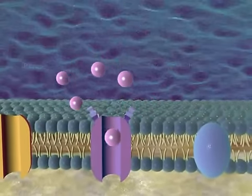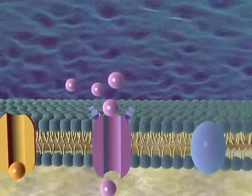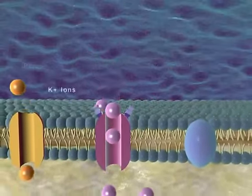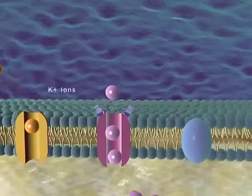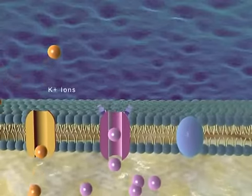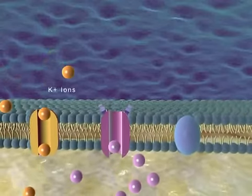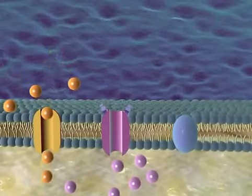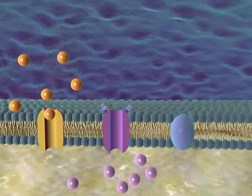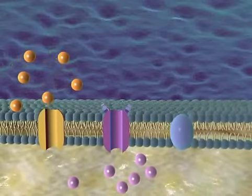In nerve cells, for example, movement of sodium ions into the cell usually excites the cell. Movement of potassium ions out of the nerve cell inhibits nerve cell excitability and function.